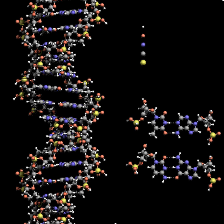Deoxyribonucleic acid is a molecule composed of two chains that coil around each other to form a double helix, carrying the genetic instructions used in the growth, development, functioning, and reproduction of all known living organisms and many viruses.